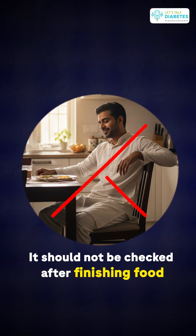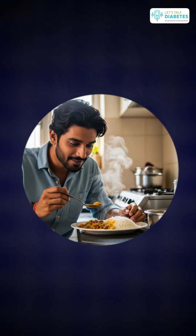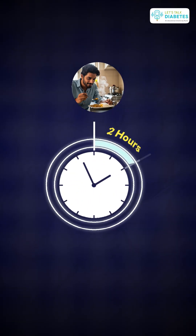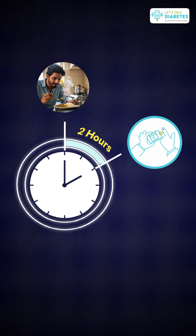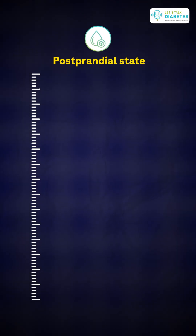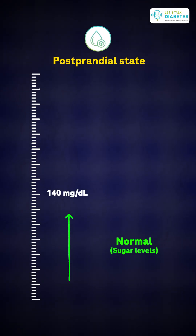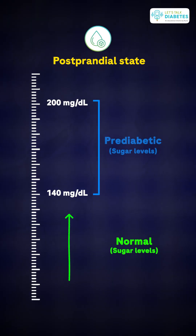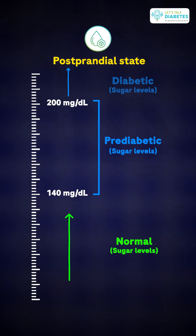Let's take the postprandial glucose. When is a person in a postprandial state? It should not be measured after finishing your food — it should be two hours from when you start eating that is the time when you need to check your glucose levels. The postprandial glucose up to 140 milligram percent is normal, 150 to 200 is in a pre-diabetic range, and beyond 200 they are labelled as diabetic.